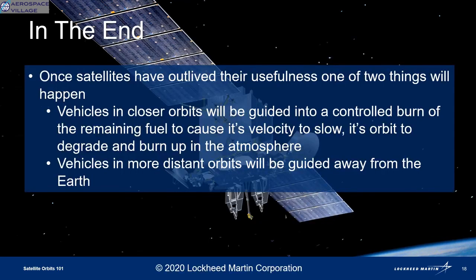Sadly, all satellites don't go to heaven. In the end, when a satellite has come to the end of its usefulness, satellites in lower orbits will be put into a controlled fuel burn and set on a course to burn up in the atmosphere. The ones in orbits further out will be guided away from Earth into the expanse. Hopefully this discussion has scratched the surface of orbital terminology for you and you've learned a couple of new things. Thanks for your time, and enjoy the rest of the conference.